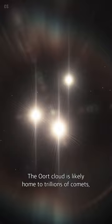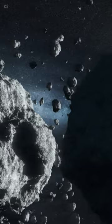The Oort cloud is likely home to trillions of comets, and it may even contain some planets. It is crucial for comprehending the origins and evolution of comets in our solar system.